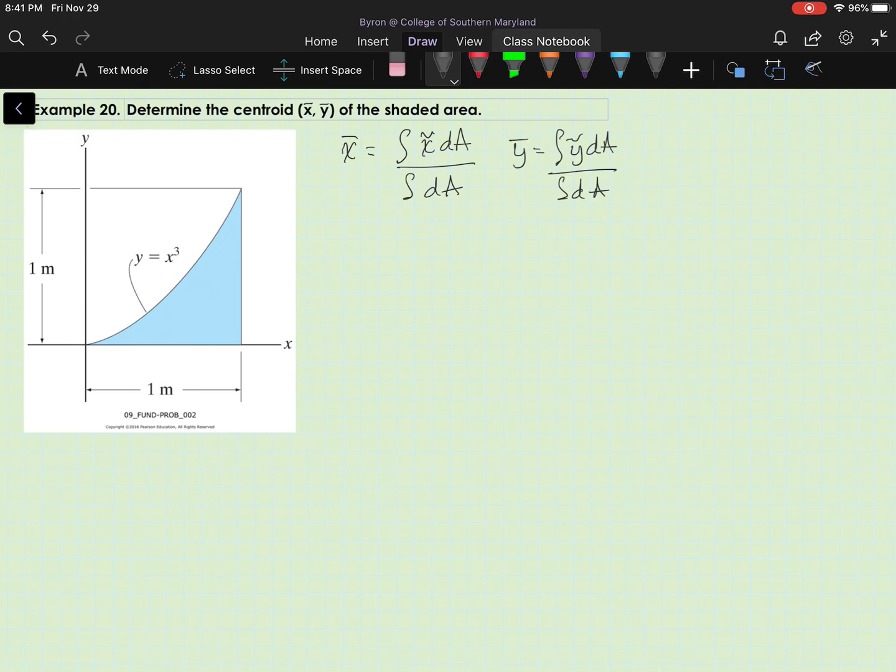Our first step is to choose an appropriate differential element, dA, and we have y in terms of x. That's a pretty good hint that we want to use a vertical rectangular element.